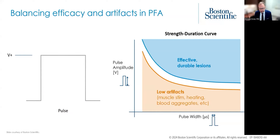One way to boil down a lot of this complexity is to describe pulse field ablation with a classic strength-duration curve, where the y-axis is the amplitude of the pulses and the x-axis is the duration of the energy we're applying. We want to be in the upper right — effective, durable lesions. But we also want low artifacts: low muscle stimulation, low heating, low blood cell aggregation, and prevention of arcing. In practice, it's very difficult to make these two areas intersect. When we start researching pulse field ablation using off-the-shelf catheters, you quickly discover you're either getting a good lesion or you're getting low artifacts, but not both.